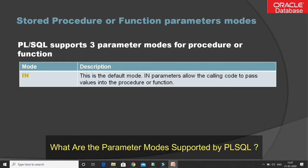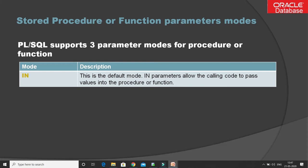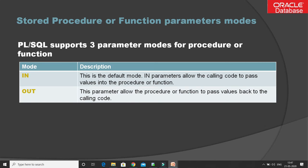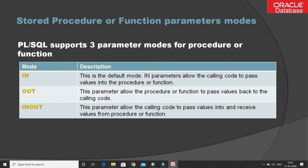The three parameter modes are: first, IN — this is the default mode; IN parameters allow the calling code to pass values into the procedure or function. If you do not specify a mode explicitly, it defaults to IN, meaning input parameter. Second is OUT — this parameter allows the procedure or function to pass values back to the calling code. Finally we have IN OUT, which is a combination of both IN and OUT; this parameter allows the calling code to pass values into and receive values from the procedure or function.